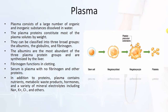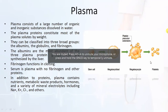From stem cells, the megakaryoblast will form, and from the megakaryoblast, the megakaryocyte will form — the platelet precursor — which then gives rise to platelets.